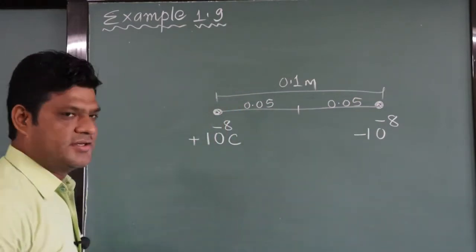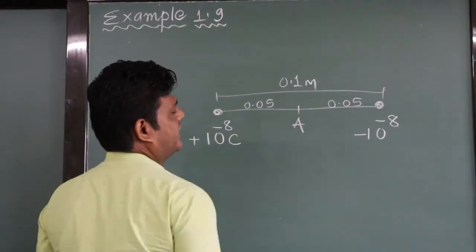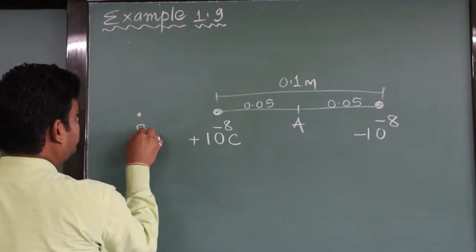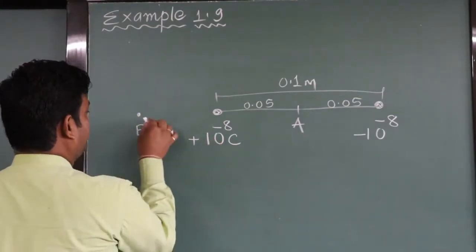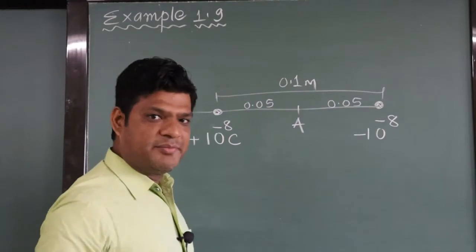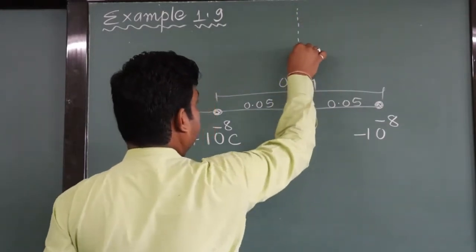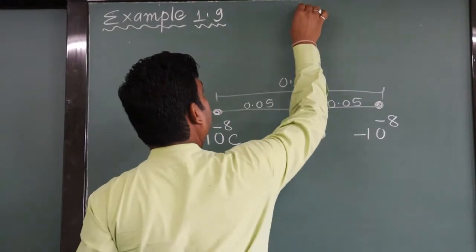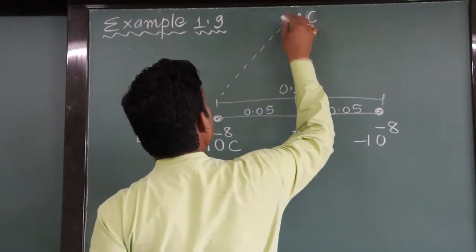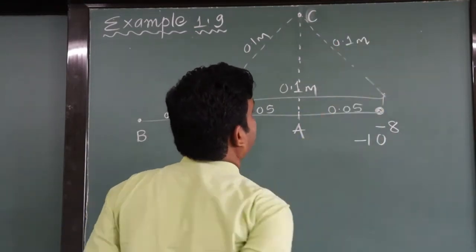The question is to find the electric field intensity at point A, which is kept at the centre. Find the electric field at point B, which is nearer to the plus charge at a distance of 0.05. The third point C is kept here, with distance 0.1 meter on each side, as given in the diagram.